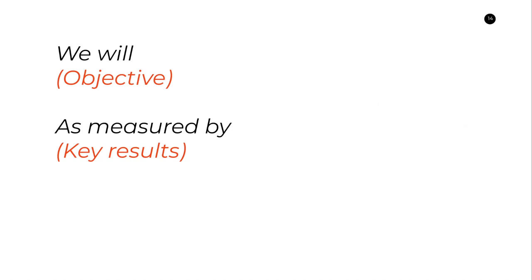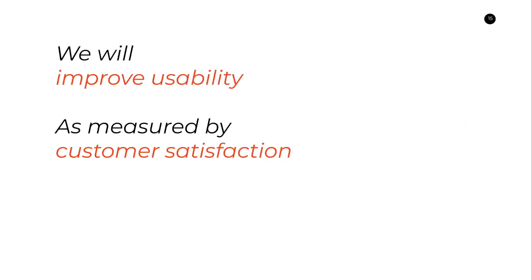In the simplest form, we're saying we will achieve an objective as measured by key results. A simple example: we will improve usability as measured by customer satisfaction. Not overly complicated — we're talking about an outcome and how we're going to measure it. In practice, you're going to set targets and goals behind those key results, so customer satisfaction will go from a current score to a future score.